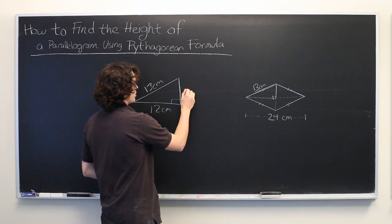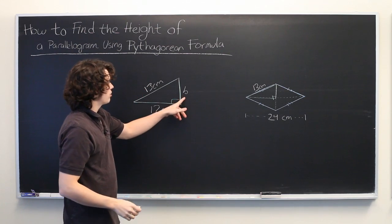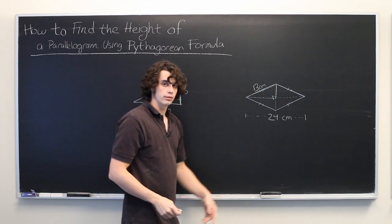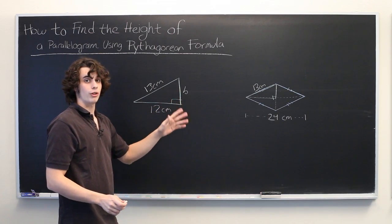Once we can find this, which we'll call B, B is going to be one-half of the total height. So if we can find the remaining side of this triangle, we've solved our problem.